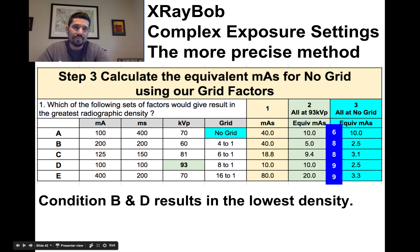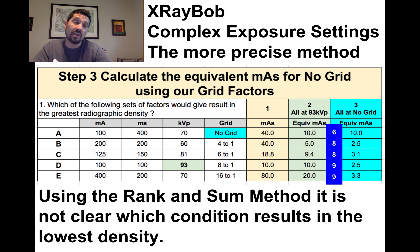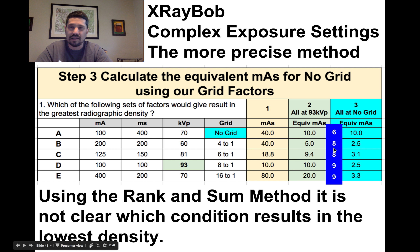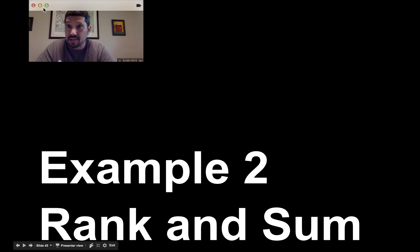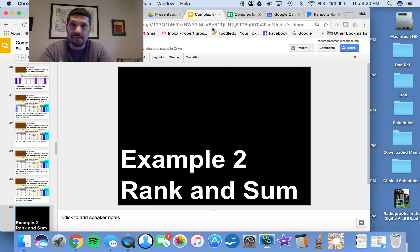Now we have all the equivalent mAs values at 93 kVp. Next, we scale them all as if there were no grid, using the grid factor formula. For example: 10 mAs with no grid stays as 10 mAs. But 5 mAs with a 4:1 grid (grid factor of 2) gives the same density as 2.5 mAs with no grid. And 10 mAs with an 8:1 grid (grid factor of 4) equals 2.5 mAs with no grid. This gets everything to apples-to-apples.